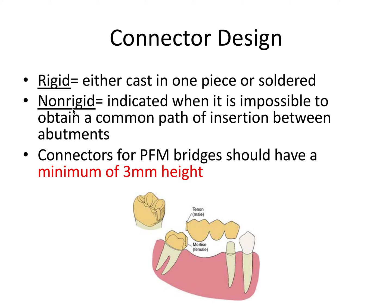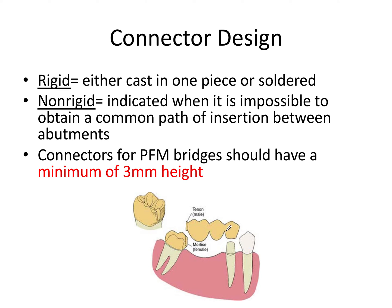The non-rigid connector design, shown in this image, allows you to put the components together like puzzle pieces and take them apart. This male-female kind of design is indicated when it's impossible to obtain a common path of insertion between the abutments. For example, the path of insertion follows the long axis of the prep. If a tooth is tipped, the prep is made along that tooth's long axis, creating a different path of insertion — a discrepancy between a vertical seating and an oblique path.